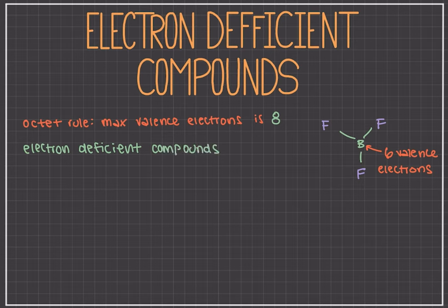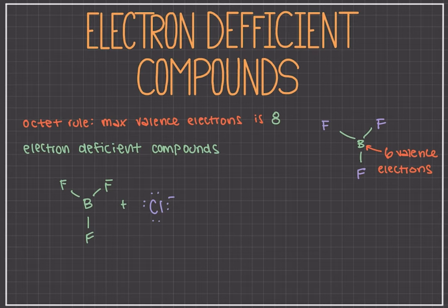Electron deficient compounds have a tendency to undergo chemical reactions that will complete their valence shell octets. In such reactions, an electron deficient compound reacts with a species that has one or more unshared valence electron pairs. For example, if boron trifluoride was reacted with a chloride ion, the chloride ion has an electron pair that it can use to bond with the electron deficient boron. So here is the donated electron pair.